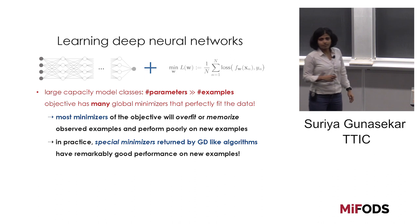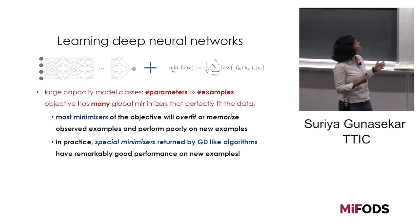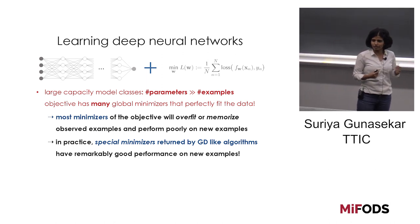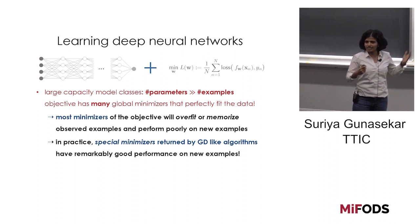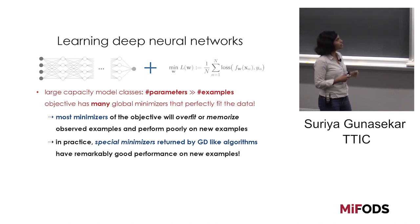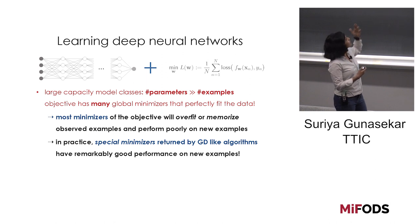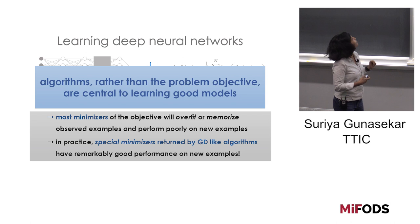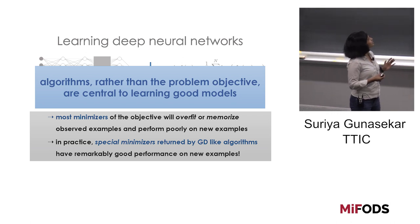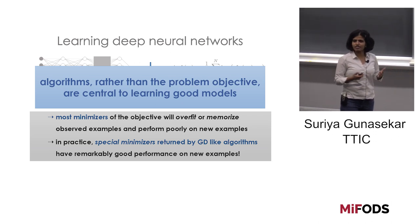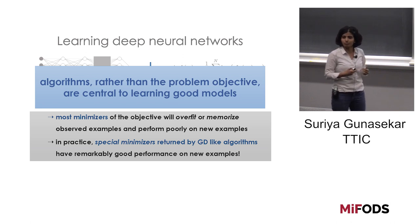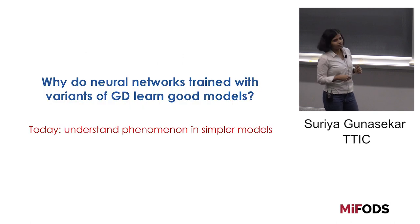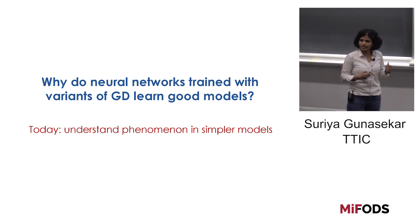An even more mysterious aspect is that neural networks used in practice are extremely large capacity, and the number of parameters is typically much larger than the number of examples. As a consequence, the optimization objective has multiple global minimizers that perfectly fit the data. Most minimizers of the objective will overfit or memorize the data and perform poorly on the test dataset. But the special minimizers returned by gradient descent-like algorithms have remarkably good performance on new examples.